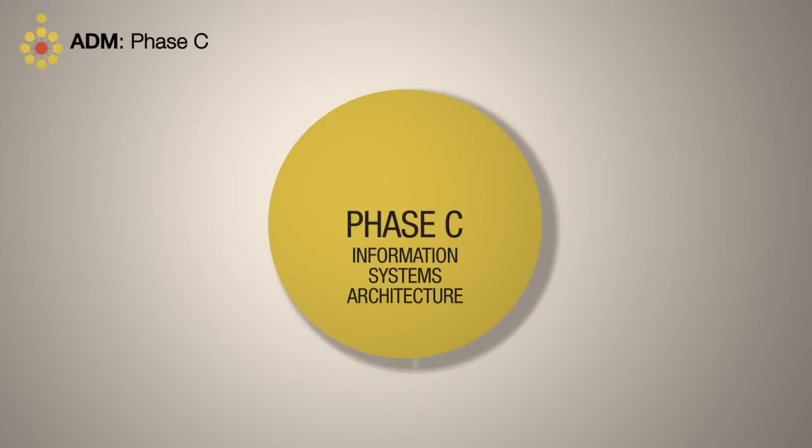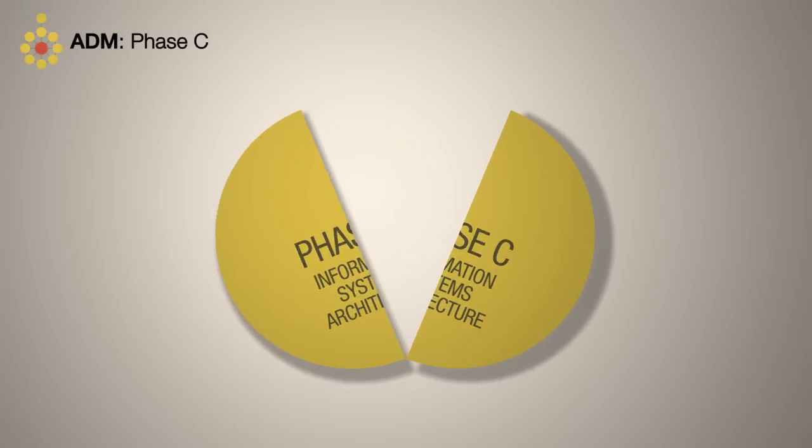TOGAF divides Phase C, the information systems architectures, into two, covering the development of the data and application architectures.